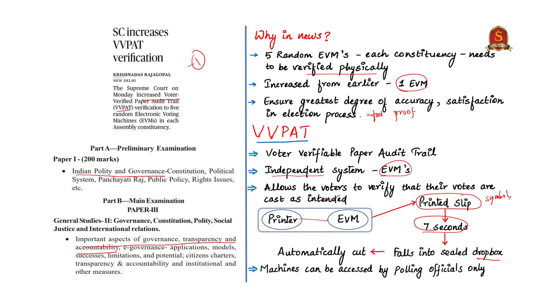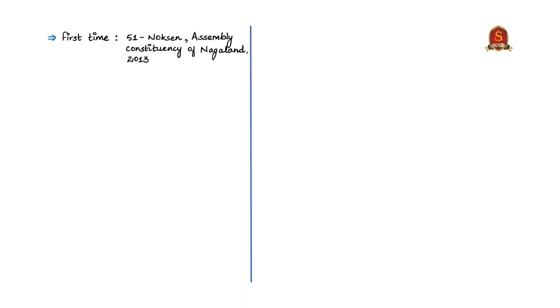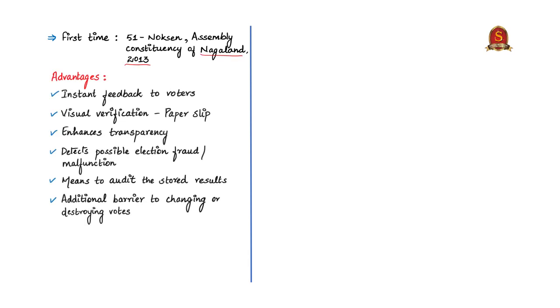VVPAT machines can be accessed by the polling officers only. It was first used in 2013 in Nagaland Assembly Elections. Let us now know what advantages VVPAT has.